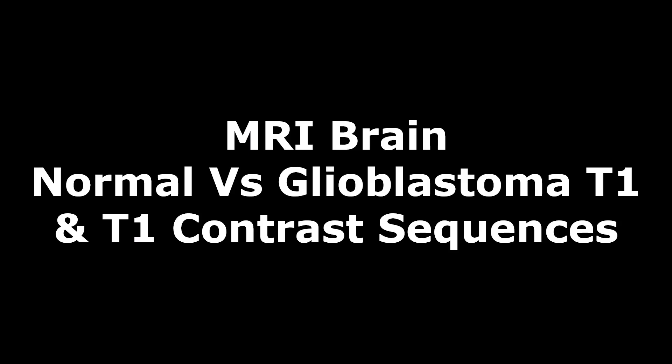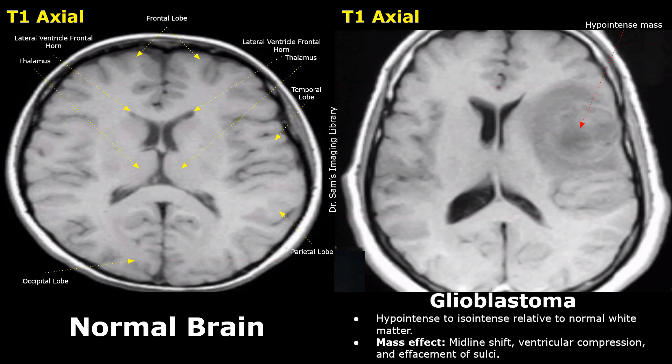Hello everyone, this is Dr. Sam and today we will learn about glioblastoma on MRI. We will only look at T1 and T1 contrast images. Glioblastoma is a WHO grade 4 astrocytoma, the most aggressive primary brain tumor. MRI is the key imaging modality for its diagnosis and characterization. Today, we will only focus on T1 and T1 contrast images of this tumor and study about other sequences in a separate video.